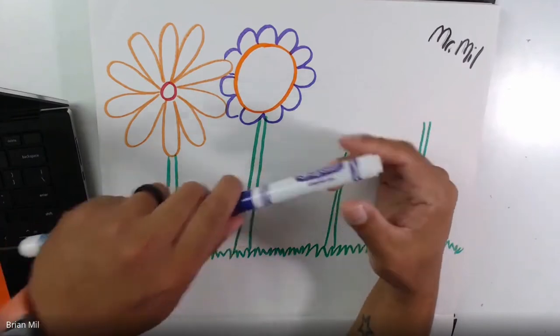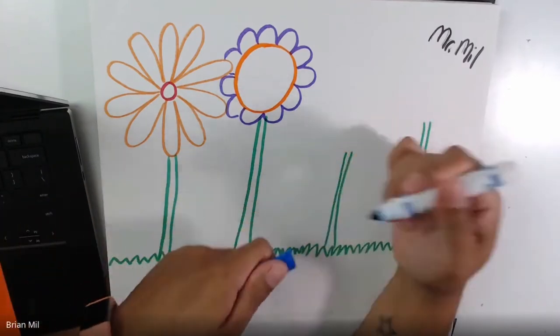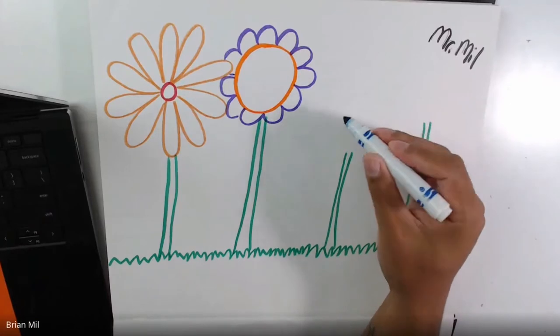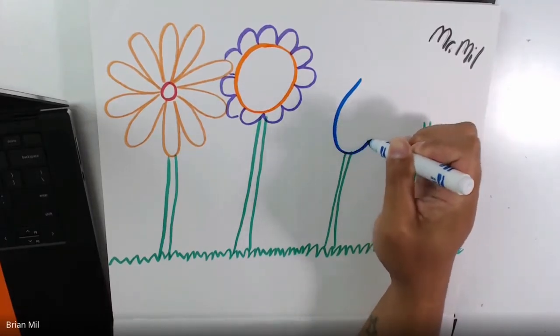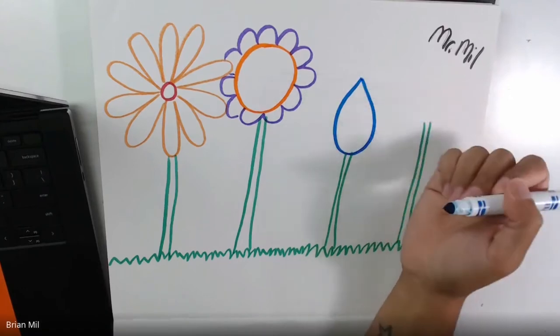So those are the two types of flowers that I see kindergarten, first grade, second grade do. This is great. But that's all, that's the only flowers that they know how to do. So what I want to teach you guys is how to draw some other flowers, just so you guys have more ideas and more variety in your drawings. So here I go. If you know how to draw a teardrop, it's exactly what the next flower is going to look like. So the next flower, I'm going to start a teardrop right in the center, just like that.